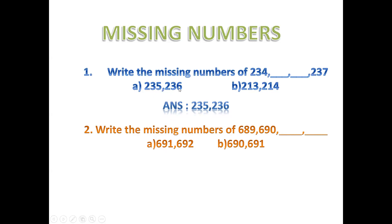These two numbers you will write here. Number two: write the missing numbers. 689, 690. After 690, which number comes? 691, 692. So the answer is 691 and 692.